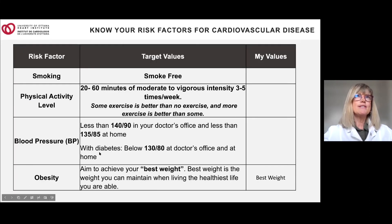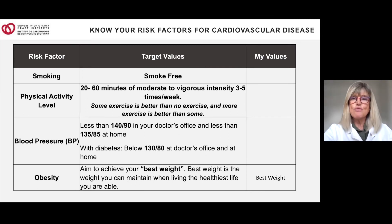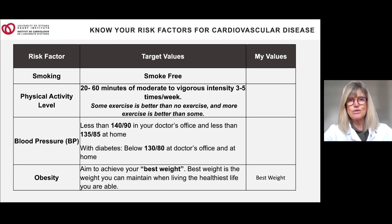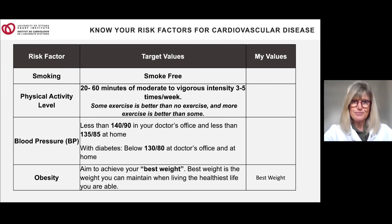Now let's go over the risk profile that was sent to you after your initial intake session. It's tailored specifically to you, showing where you are in terms of risk factors. There are three columns: other risk factors, target values, and your own personal values. Smoking is the biggest risk factor — the goal is to be smoke-free. For physical activity, aim for 20 to 60 minutes of moderate to vigorous intensity exercise three out of five times per week; some exercise is better than none.